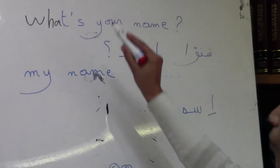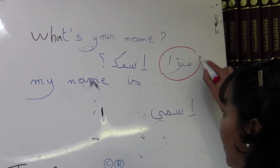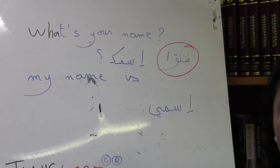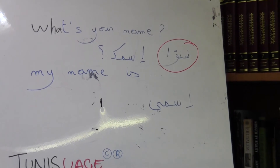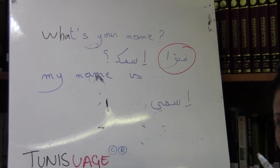So, what is 'Shnoa'? It means 'what.' And 'Esmec' means 'name.'